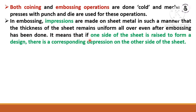If one side of the sheet metal is raised to form a design — either top or bottom, but basically the top side — there is a corresponding depression onto the other side of the sheet metal. As a real application, in four-wheelers or two-wheelers, the number plates available nowadays have impressions onto sheet metals as per the number. That is the embossing operation.